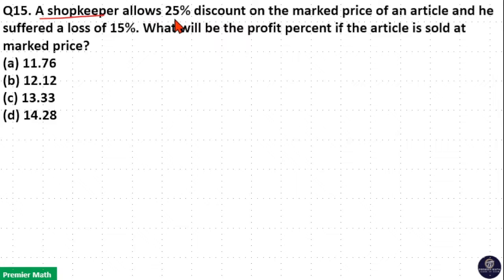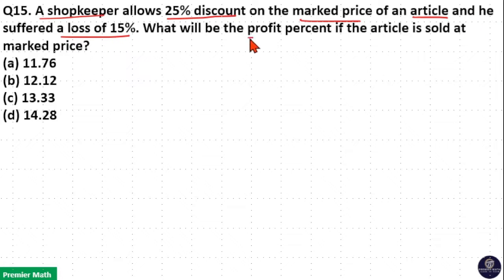A shopkeeper allows a 25% discount on the marked price of an article and suffered a loss of 15%. What will be the profit percentage if the article is sold at the marked price?